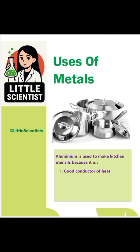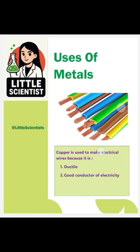Next is aluminium. Aluminium is used to make kitchen utensils because it is a good conductor of heat. And the last one is copper. Copper is used to make electrical wires because it is number 1: ductile.